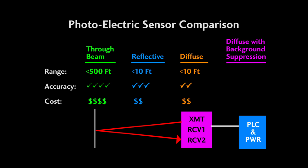These background suppression sensors have about the same range and are about the same cost as a regular diffuse sensor, but they perform better in many applications.